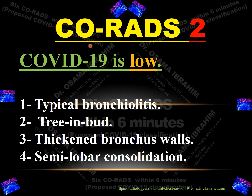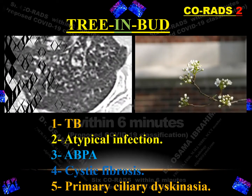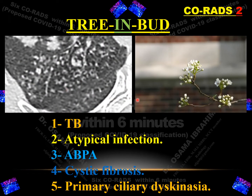The next is CO-RADS 2, which means COVID-19 is low. If there are typical bronchiolitis, centrilobular nodules, thickening bronchial wall, or lobar consolidations, we consider it CO-RADS 2, meaning COVID-19 suspicion is low. As shown with this patient with centrilobular nodules, which are considered CO-RADS 2, the suspicion of COVID-19 is low.